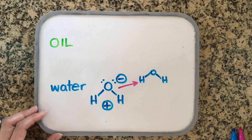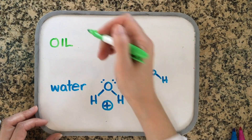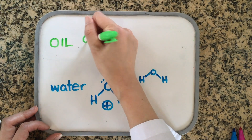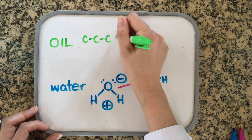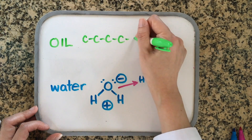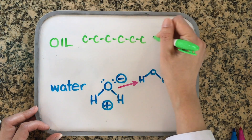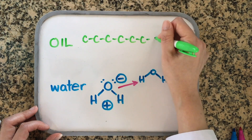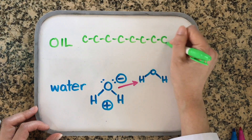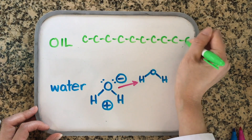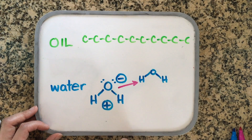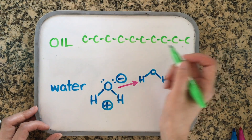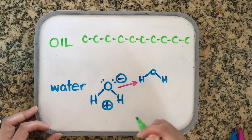Oil, on the other hand, is made up of chemicals that have long chains of carbon atoms as their backbone. All of these carbons are the same and exert the exact same amount of pull on their electrons, so there's nowhere along this molecule that is more negative or positive than another part. Oil is what we call a non-polar substance.